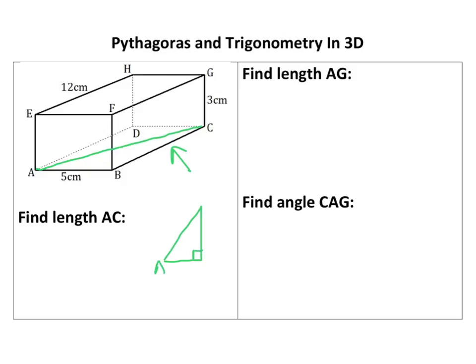If I do ABC here, that would be 5, and that would be 12 there. So we use Pythagoras, we've got two sides of a right angle triangle, we're finding the third side, 5 squared, and we're finding the hypotenuse, so it's add. And I know that one is 13.